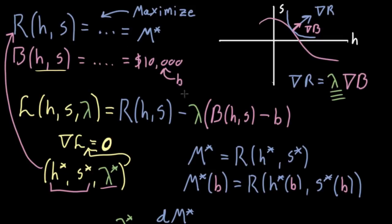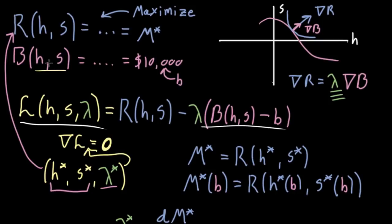As you know, one way to solve this constrained optimization problem is to define the Lagrangian, which involves taking the function you're trying to maximize — in this case the revenue — and subtracting a new variable lambda, the Lagrange multiplier, times the budget function — however much you spend as a function of your input parameters — minus the budget itself, say $10,000 in our example.